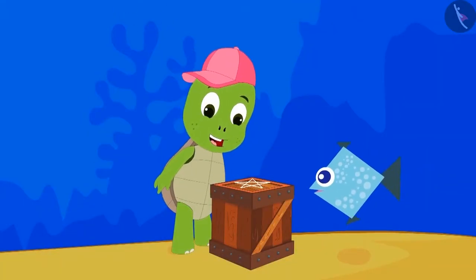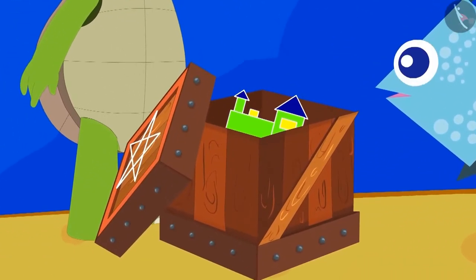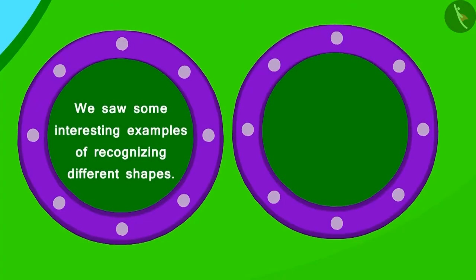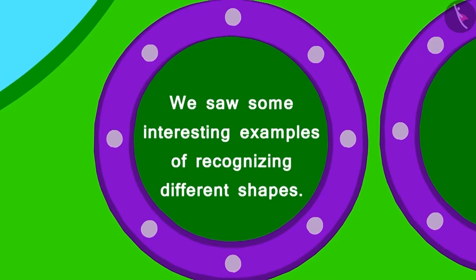Now the fish opened the box and returned Tufan's toy. Children, in this lesson, we saw some interesting examples of recognizing different shapes.